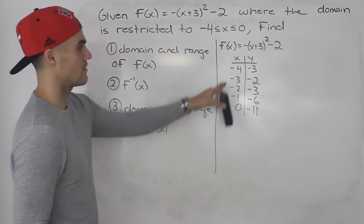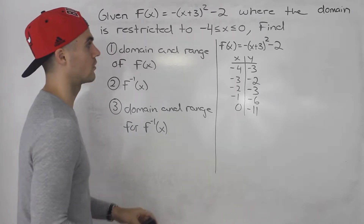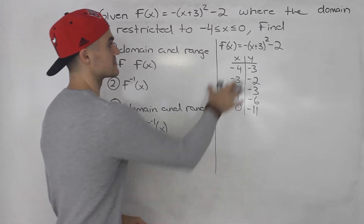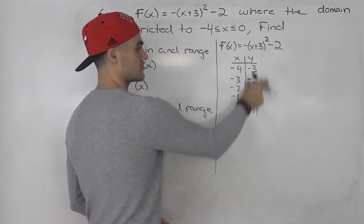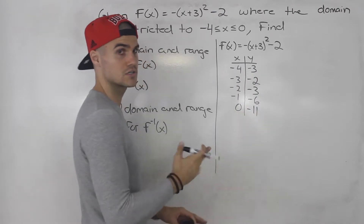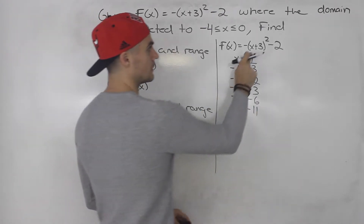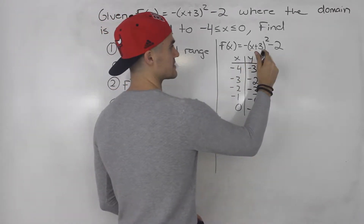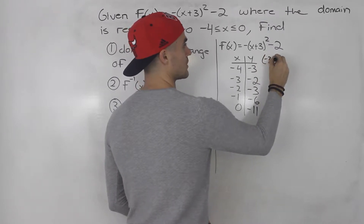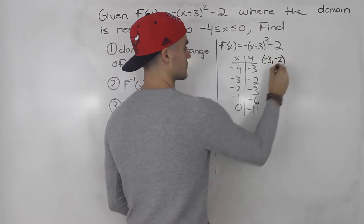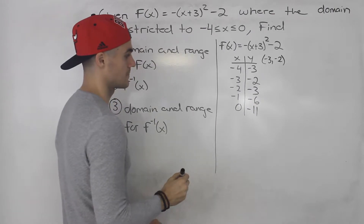So that's the table for this function. The domain is restricted, so that means the range is going to be restricted as well. Notice that this function has a vertex at negative 3 and negative 2, which is part of the table, which is nice.